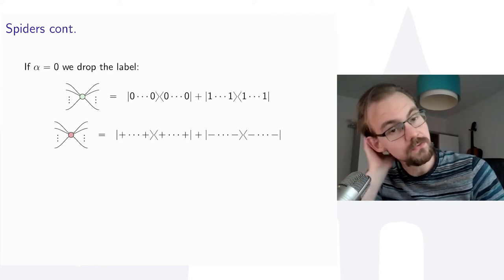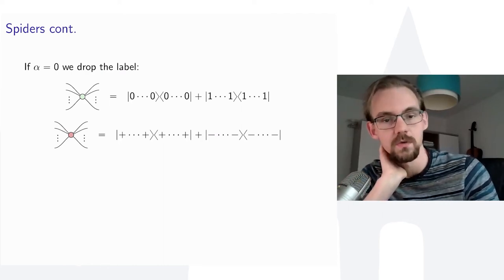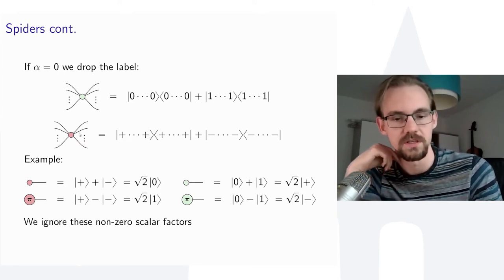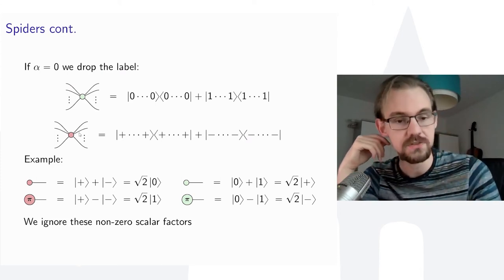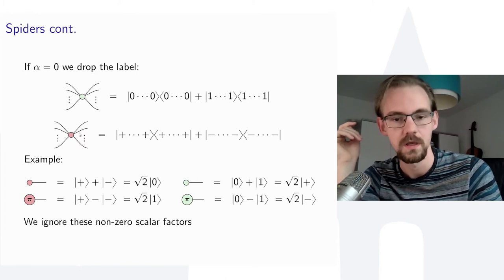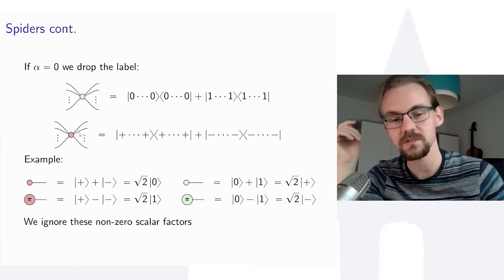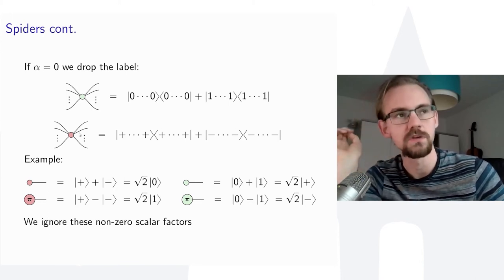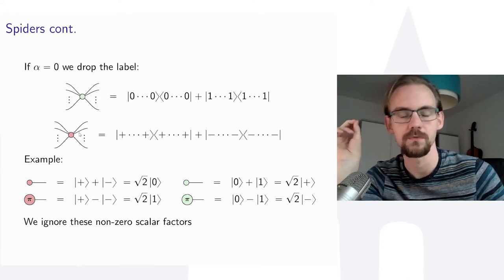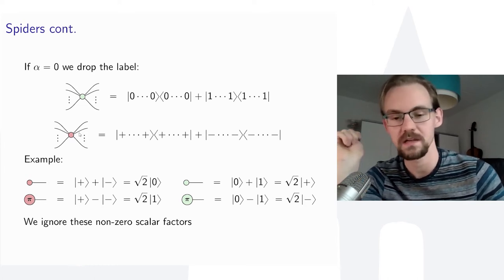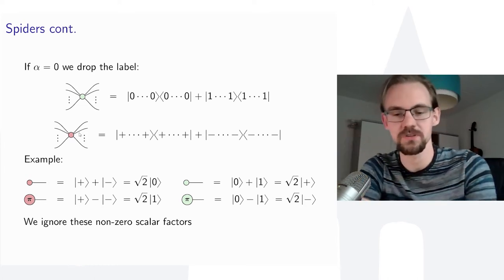If the phase is zero, we just don't write a phase — that's a useful shorthand. To give some examples: a red dot with no inputs is the |+⟩ plus |−⟩ state, which up to a scalar factor is the |0⟩ state, and similarly for other combinations. The global scalar factor can be tracked but is often ignored when dealing with unitaries. In this talk, I'll ignore these global factors.